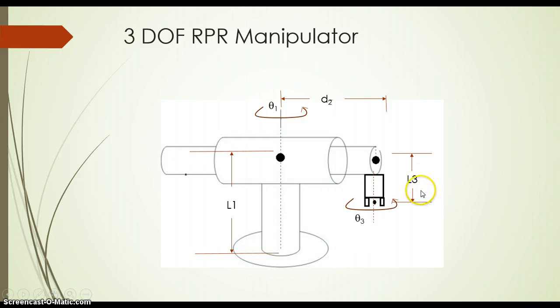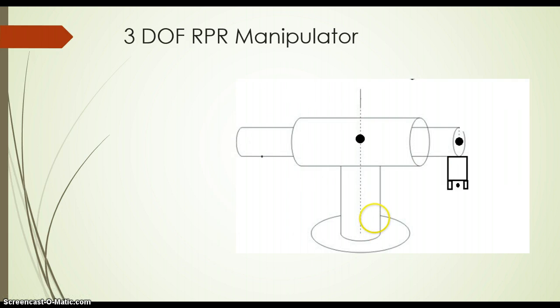With the length L3, other things remain as they are. Our joint location: first joint rotates about vertical axis by theta 1. This horizontal arm is moving inward and outward; d2 is the instant length of sliding. Theta 3 is the rotation of the tool.